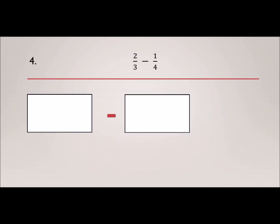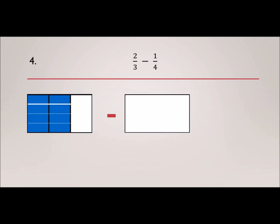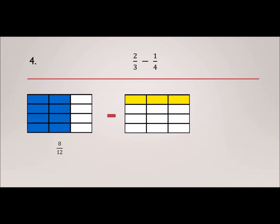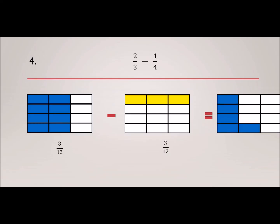Let's try number four: 2/3 minus 1/4. Go ahead and pause the video and work on it. The first box should be divided into 3 parts with 2 colored, and the second into 4 parts with 1 colored. Together they should have 12 as the common denominator — so that changes to 8 out of 12, and the second one is 3 out of 12. Subtracting 3 from 8 gives us 5 out of 12.